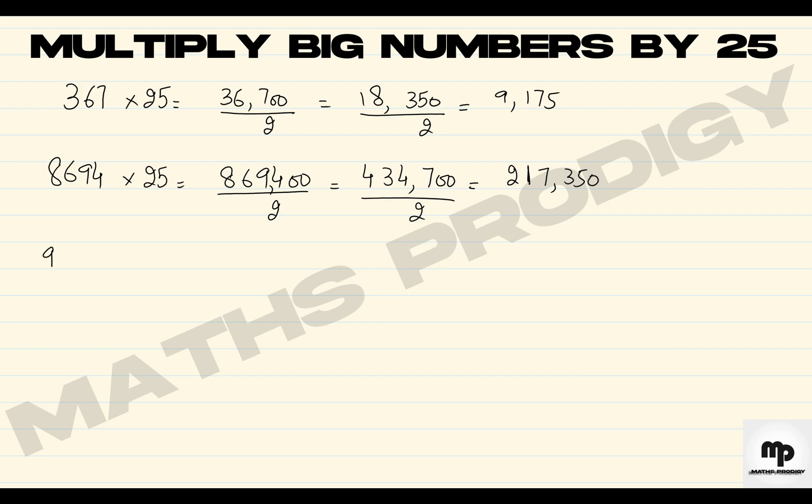So now let's take an example of 94,567, a five-digit number, by 25. So first it will be 94,567 double zero, putting the place values. Making it half will be 472,850. And half it again, there will be 236,417.5.